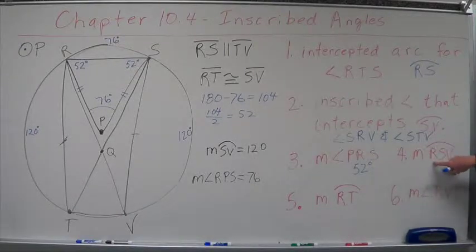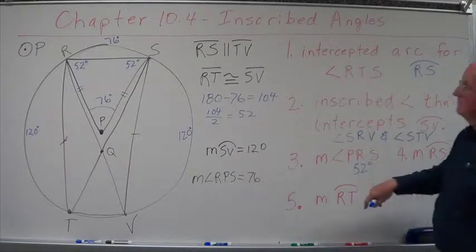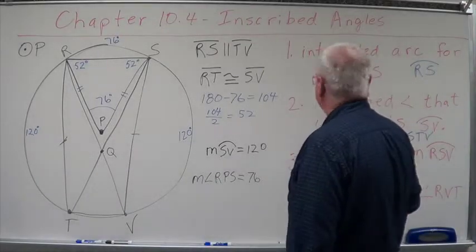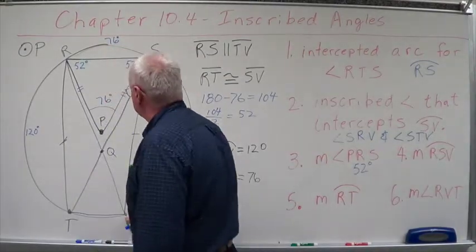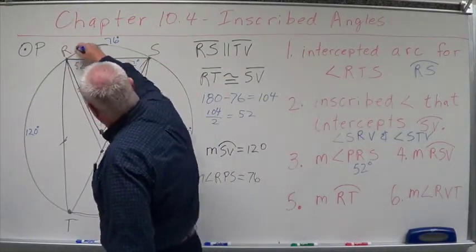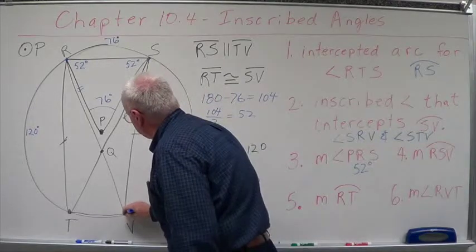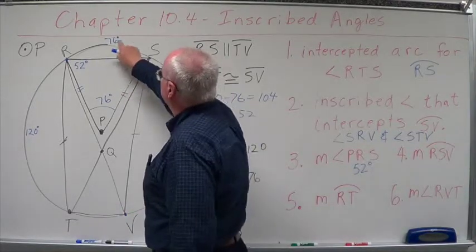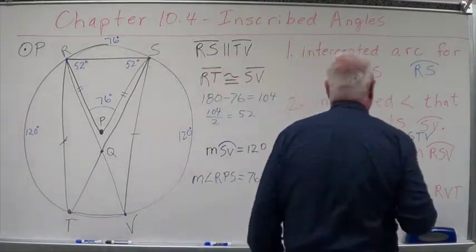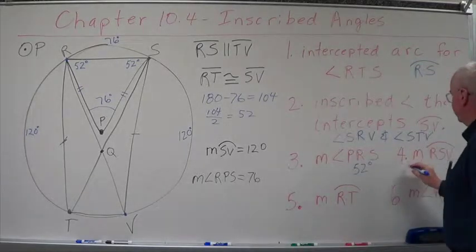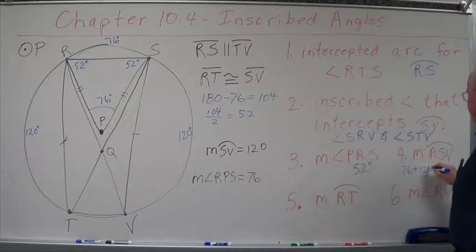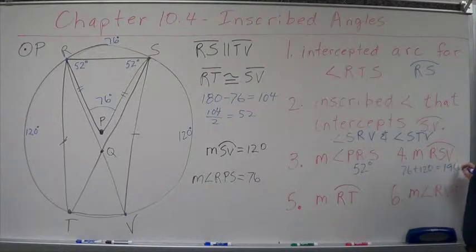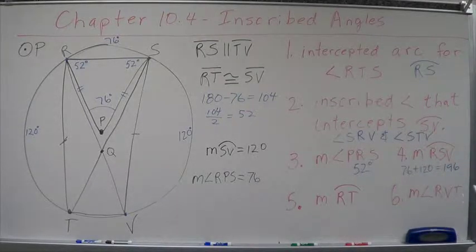Now, let's look at the measure of RSV. RS, start at R, go through S, and come to V. Well, it starts here, comes all the way around, and goes to V. So that's simply going to be 76 plus 120 equals, I think that's 196.